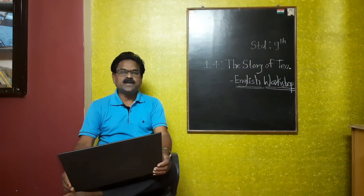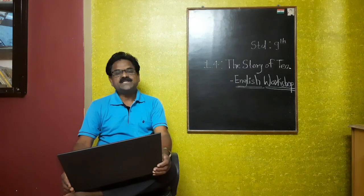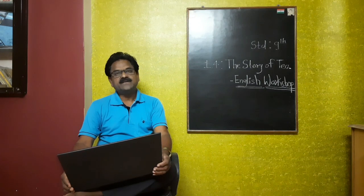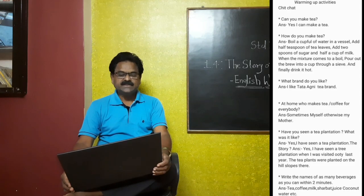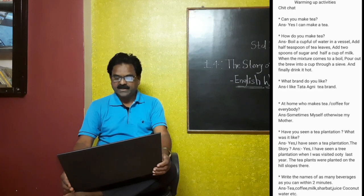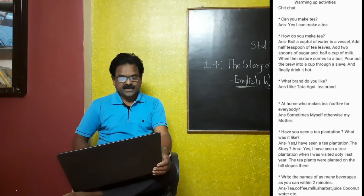Now we are going to learn the warming up activities. In the warming up activities there is a chat activity. Question number 1: can you make tea? Yes, I can make tea. How do you make tea? First, boil a cup of water in a vessel, add half a teaspoon of tea leaves, two spoons of sugar and half a cup of milk. When the mixture comes to a boil, pour out the brew into a cup through a strainer and finally drink it hot.